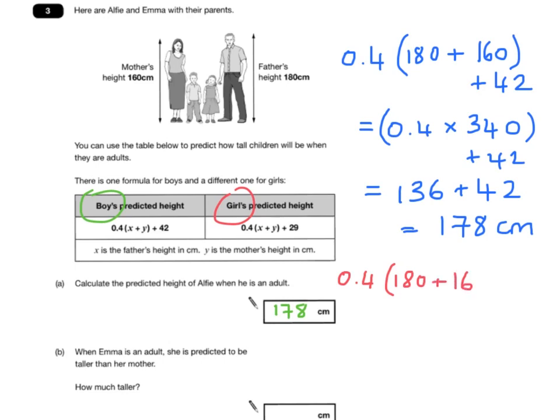0.4 times x plus y plus 29. So we do the x plus y, and we get 340 times 0.4, which is 136. In this case, it's plus 29. So, Emma is predicted to be 165 centimetres tall.